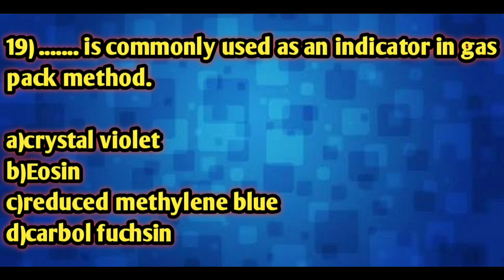Question number 19: which indicator is commonly used in the gas pack method? The options are: crystal violet, eosine, reduced methylene blue, and carbol fuchsin. The right answer is Option C — reduced methylene blue. Reduced methylene blue is commonly used as an indicator in the gas pack method.